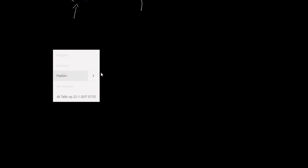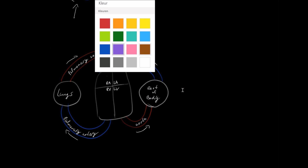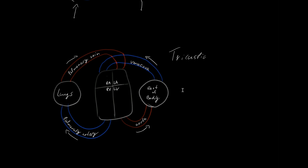Next is tricuspid atresia. Normally the tricuspid valve — the atrioventricular valve of the right heart — allows blood to flow from the right atrium to the right ventricle during diastole. In tricuspid atresia, this valve is non-existent. Blood arriving from the vena cava into the right atrium has to find another way out.